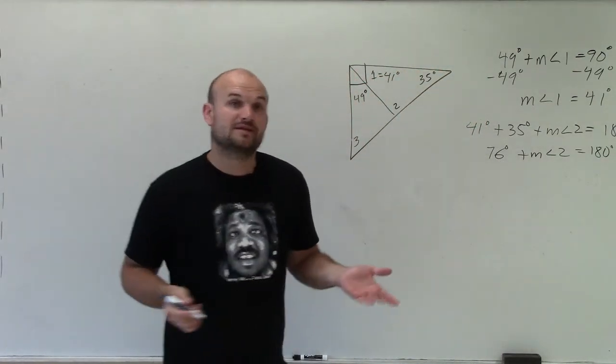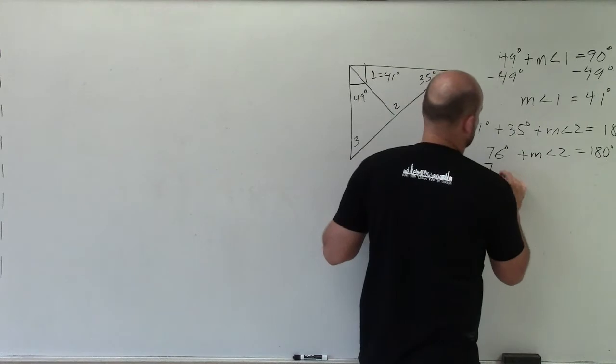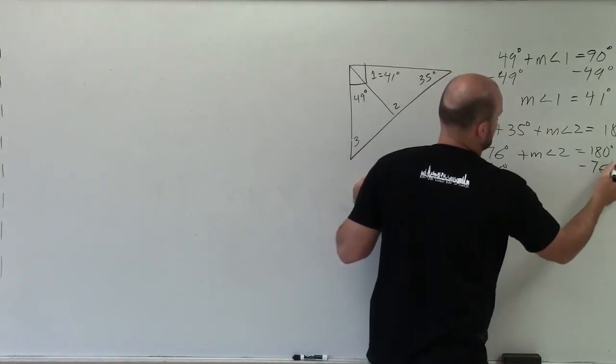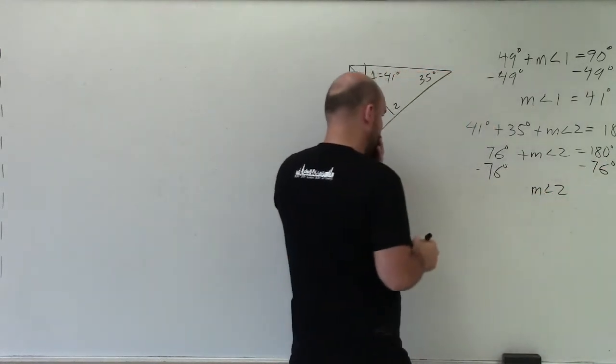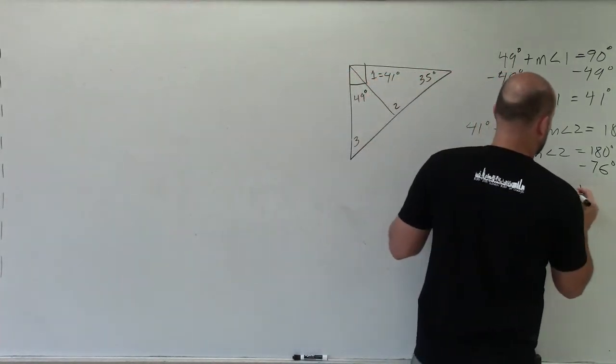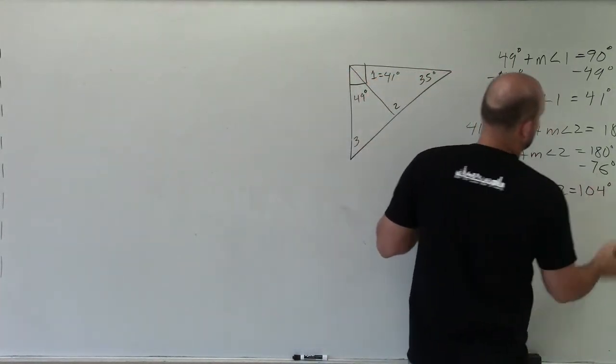Now to go ahead and solve for measure of angle 2, I'll subtract 76 degrees. And I have measure of angle 2 is going to equal 104 degrees.